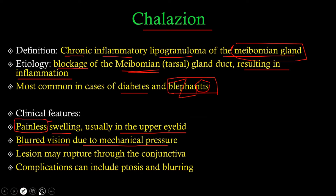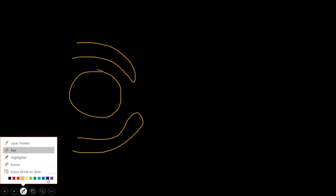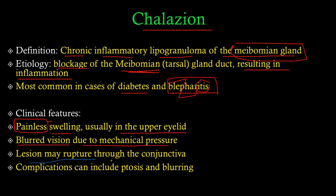The lesion may also rupture through the conjunctiva. The conjunctiva is a protective layer connected with the eyelids that wraps around the eyeball. When you have an infection of the chalazion, there is a chance it can puncture through this conjunctival layer.